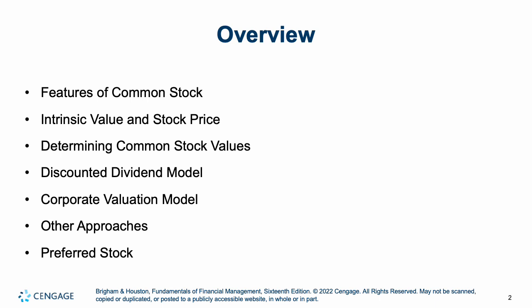We're going to look at what are some of the features of common stock — the stocks that we buy, sell, and trade. What is intrinsic value and how is it related to a company's stock price? How do we determine common stock values? What is the discounted dividend model? What is our corporate valuation model? Some other approaches. And finally, how do we deal with preferred stock? We'll look at preferred stock more in a later chapter when we talk about hybrid financing.